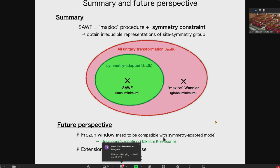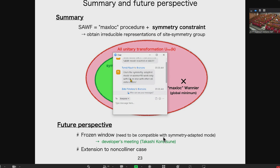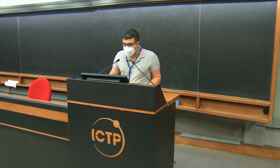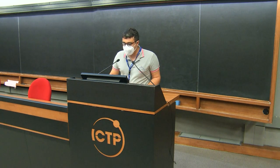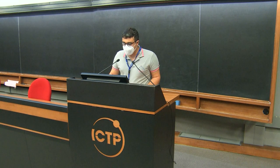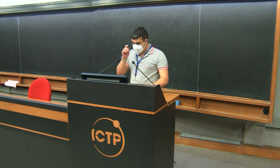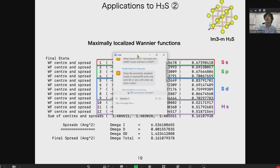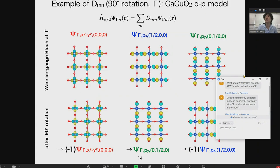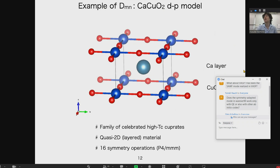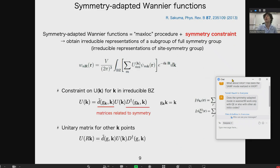Thank you for the very nice talk. There are a few questions from the chat. Two questions are essentially equivalent: does the symmetry-adapted Wannier function method work with VASP or other ab initio engines, or is it only implemented in Quantum ESPRESSO? For the moment, it is implemented only in Quantum ESPRESSO. However, we can easily create an interface from VASP or other ab initio packages, because what we need is just the additional seedname.dmn file.